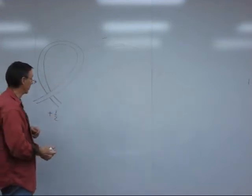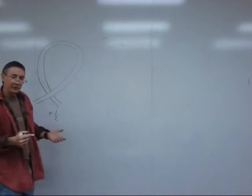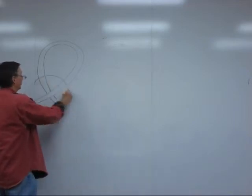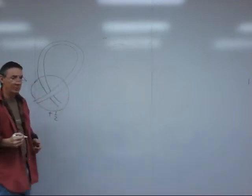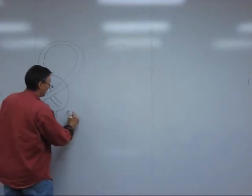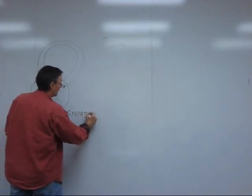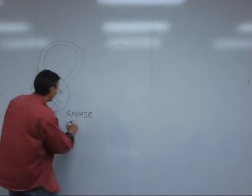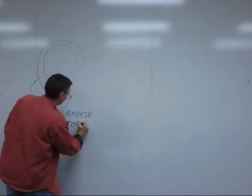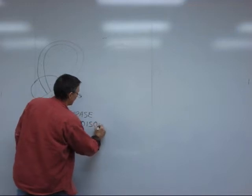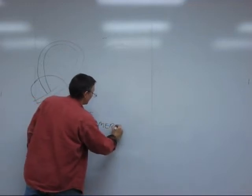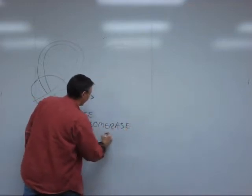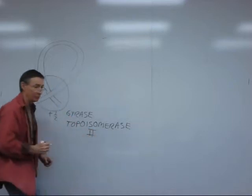The enzyme that takes care of this is called gyrase. Gyrase binds to a place like this. Gyrase is an example of the classic molecules known as topoisomerases. In particular, gyrase is a topoisomerase II enzyme.